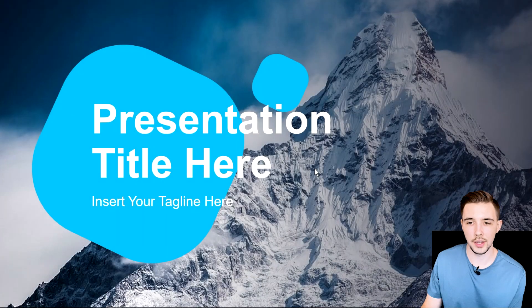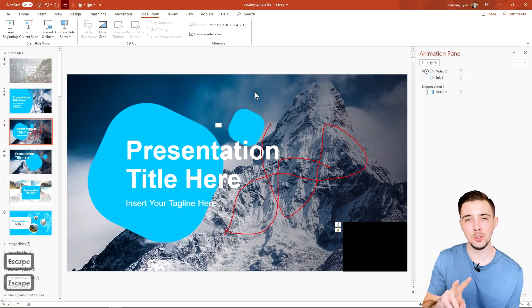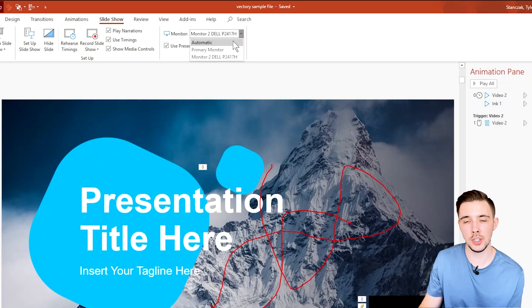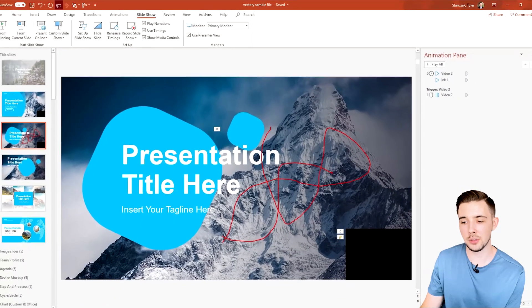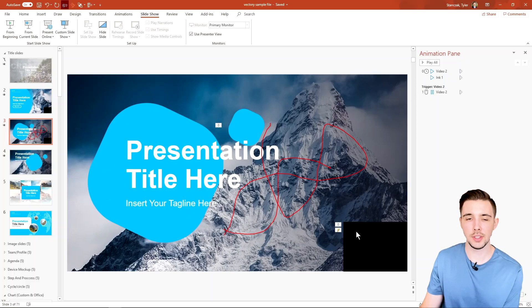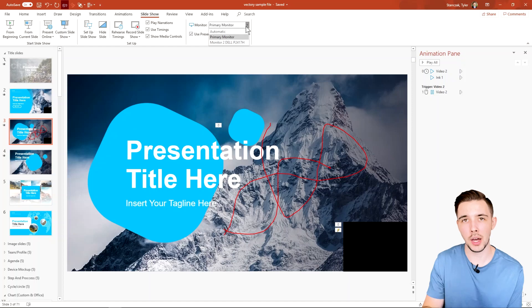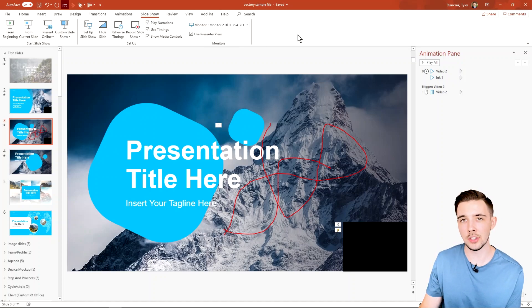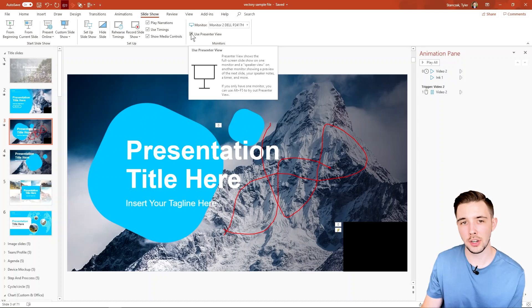Finally, we have Monitors. When you go into presentation mode, PowerPoint presents on a specific window. If you have multiple screens, you can choose which monitor to present on — for example, your laptop screen or your primary monitor. This lets you show your notes on one screen while presenting on another. If you only have one monitor it automatically uses that. You can also toggle 'Use Presenter View' on or off here.